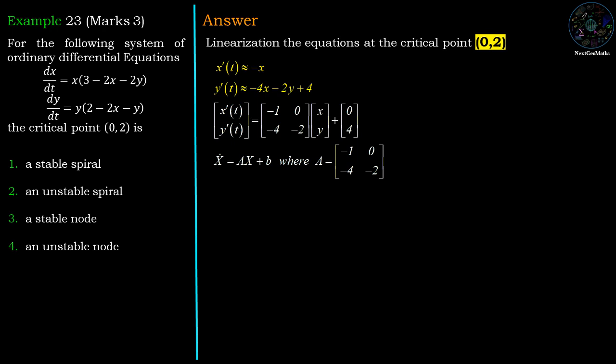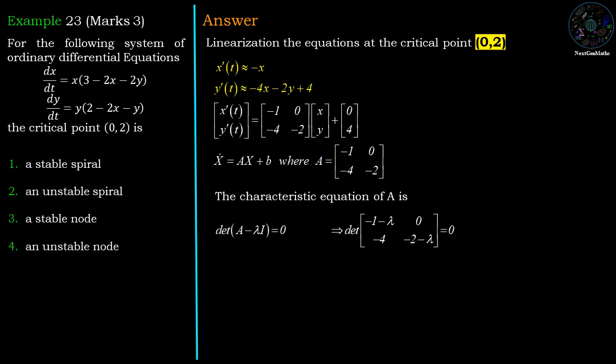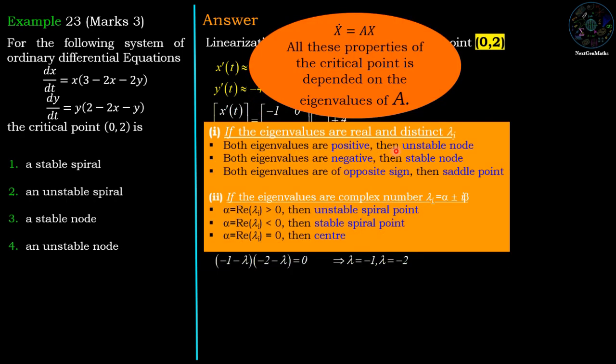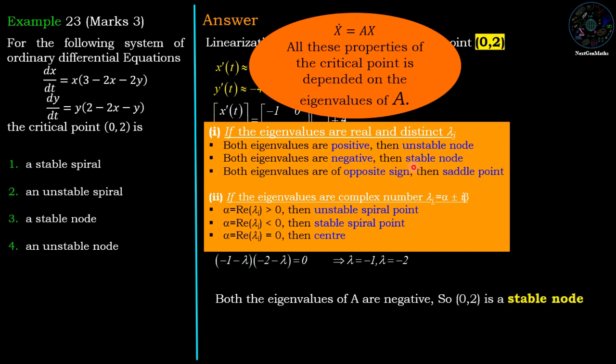The differential equations convert to the linear form x' = −x and y' = −4x − 2y + 4, which can be written in matrix form as x' = Ax + b, where A = [−1, 0; −4, −2]. The eigenvalues of A are found using the characteristic equation det(A − λI) = 0, giving (−1 − λ)(−2 − λ) = 0, so λ = −1 and λ = −2. Both eigenvalues are real, distinct, and negative, so this critical point is a stable node — option 3, which is the correct answer.